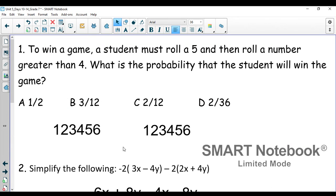Number one, to win a game, a student must roll a five and then roll a number greater than four. What is the probability the student will win a game? The first thing that we need to determine here is what's happening. The student must roll a five and then roll a number greater than four. So we're talking about two events or rolling the dice twice. The first event rolling a five, there is one five on a dice. So there is a one out of six chance of rolling a five.